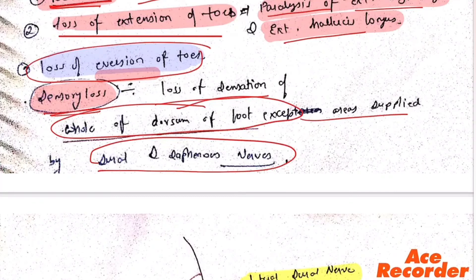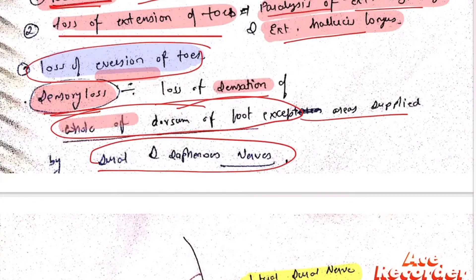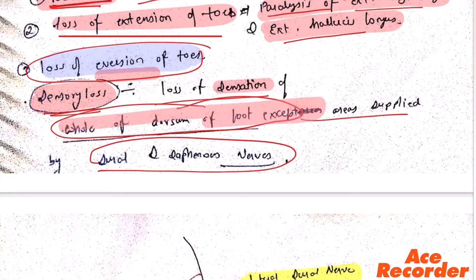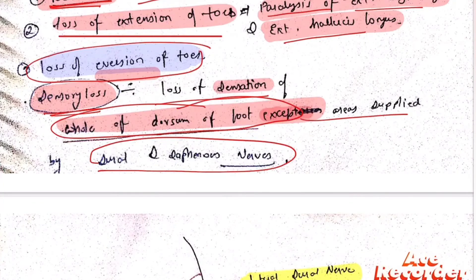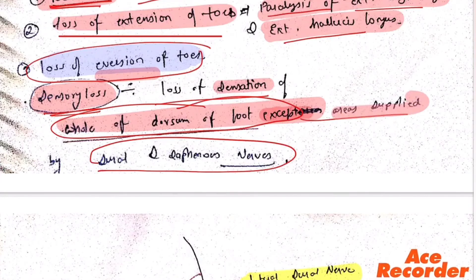Regarding sensory loss, there is loss of sensation over the whole dorsum of the foot, except areas supplied by the sural and saphenous nerves.